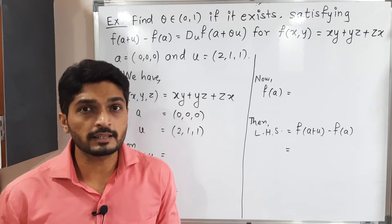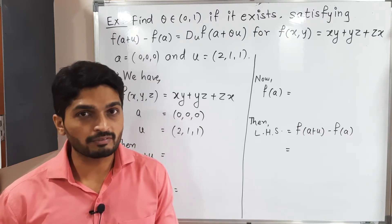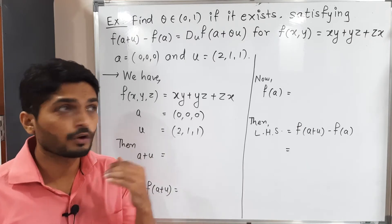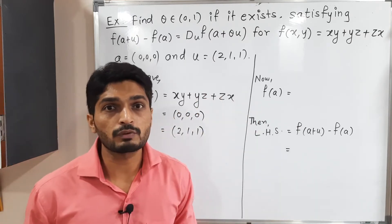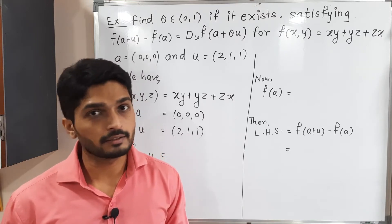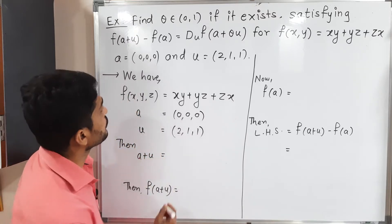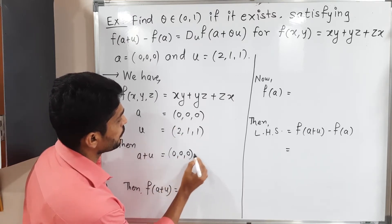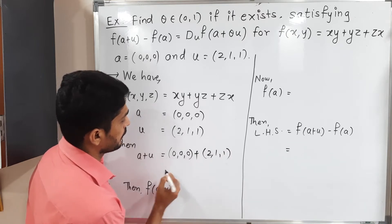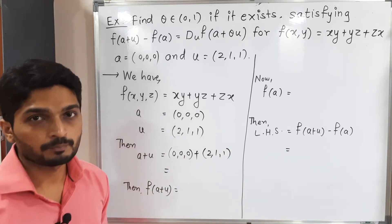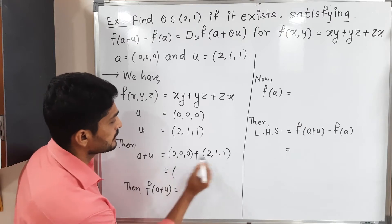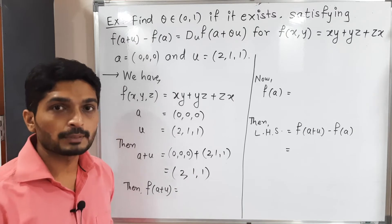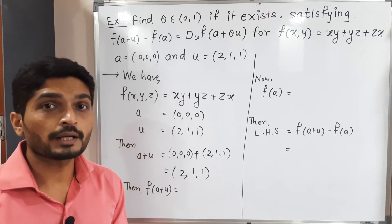We will focus on the left-hand side first. To calculate it, we need a+u, then f(a+u), then f(a), and finally by subtraction we get the left-hand side value. So let us start: a = (0,0,0) and u = (2,1,1), so by component-wise addition, a + u = (0+2, 0+1, 0+1) = (2, 1, 1).